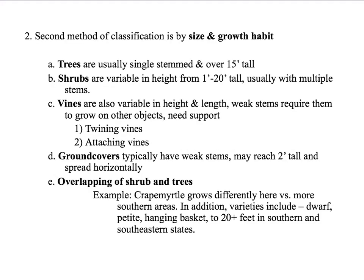Another way to classify plants is not so much by their length of life or whether they remain alive from year to year, but by the size and the growth habit — the habit being mainly the form. These are very commonly used words but they have some characteristics that go along with them. Trees are usually a single stem, although there are some multi-stem trees, mainly in an upright form and over 15 feet tall. That's a guideline — just a general classification. Shrubs can be anywhere from a foot tall to 20 feet tall, usually very densely stemmy, not just a single stem.